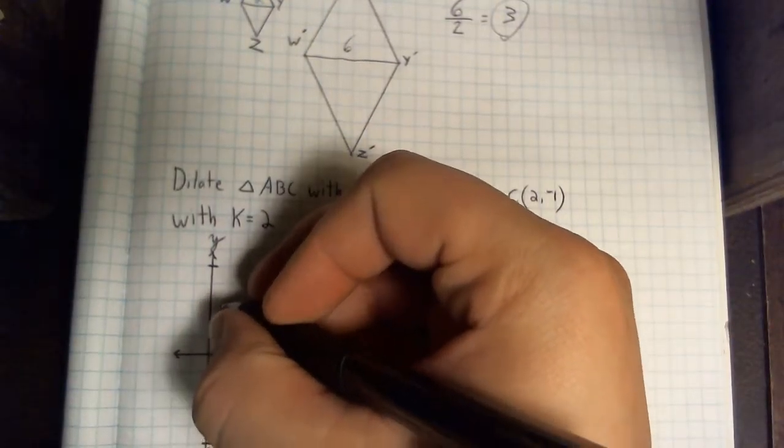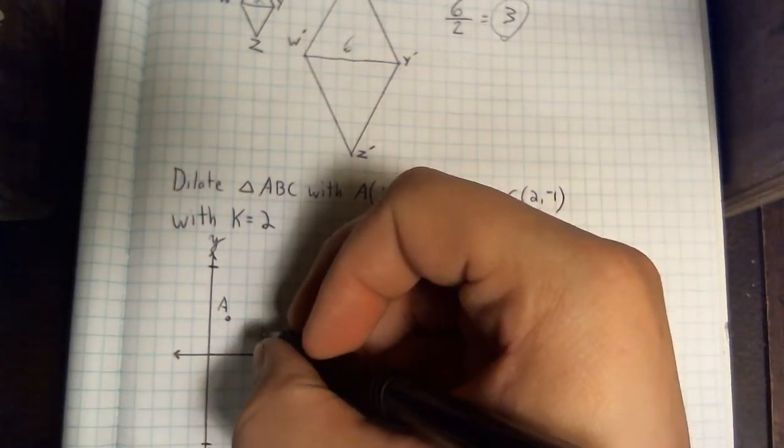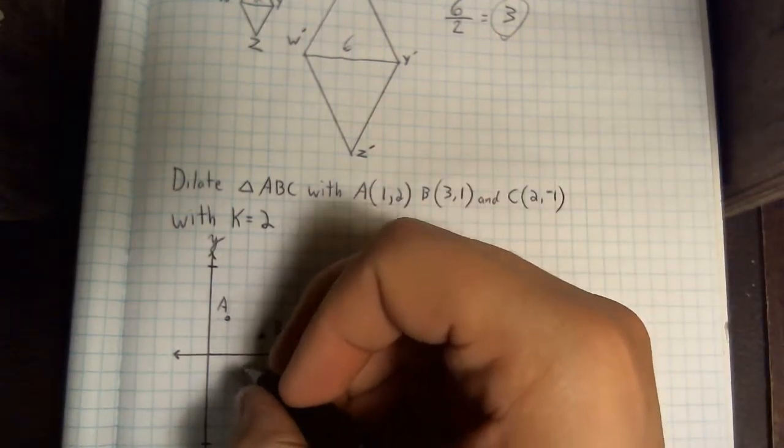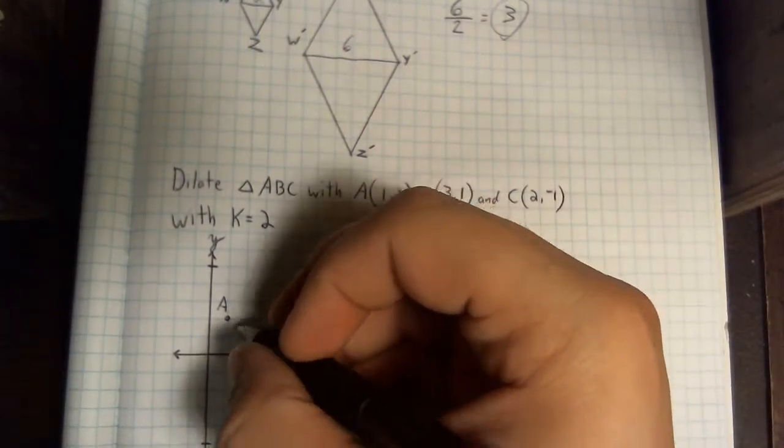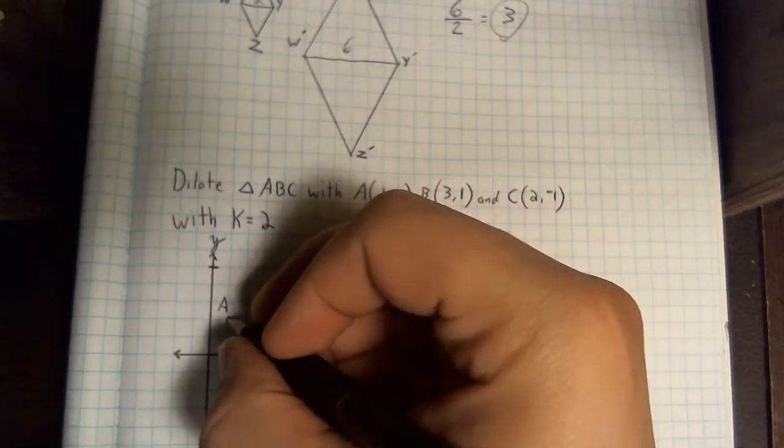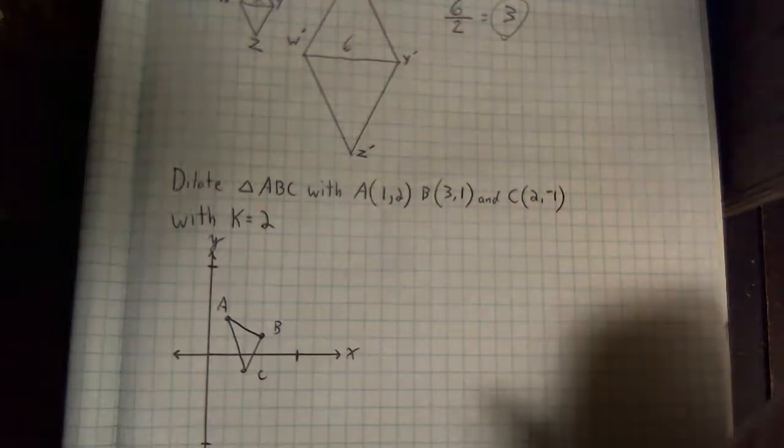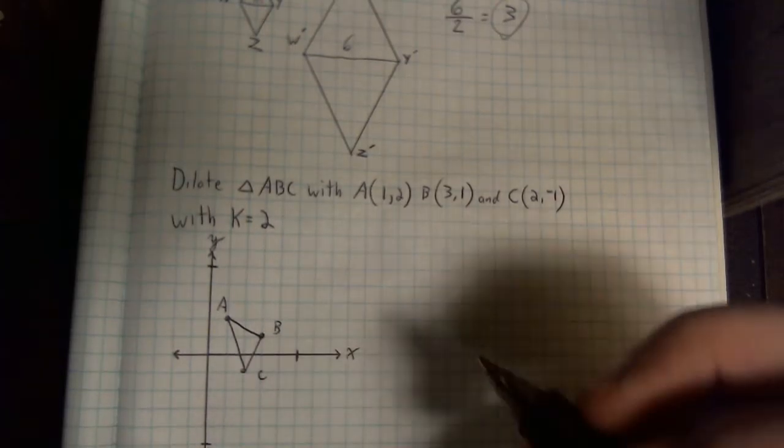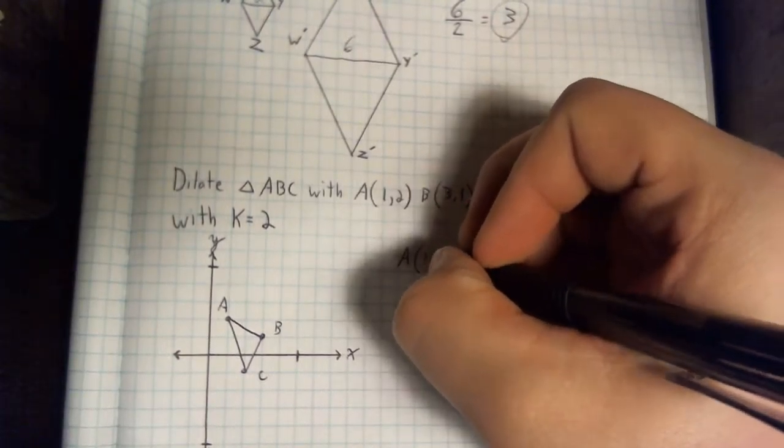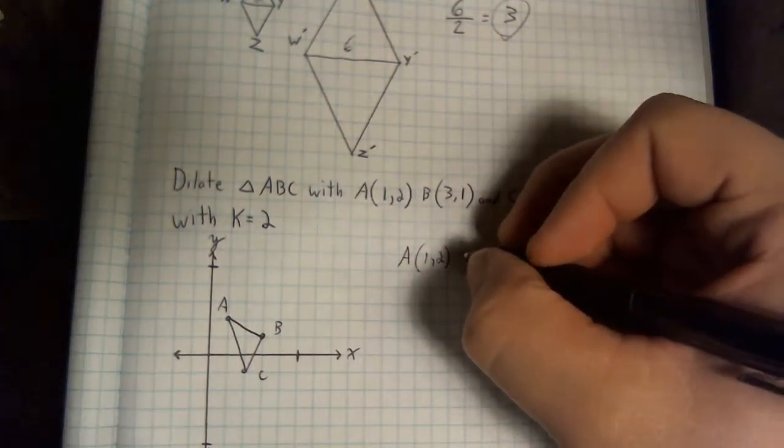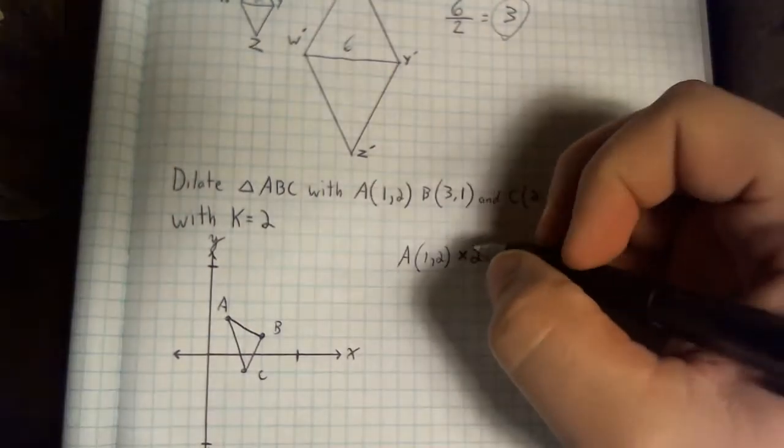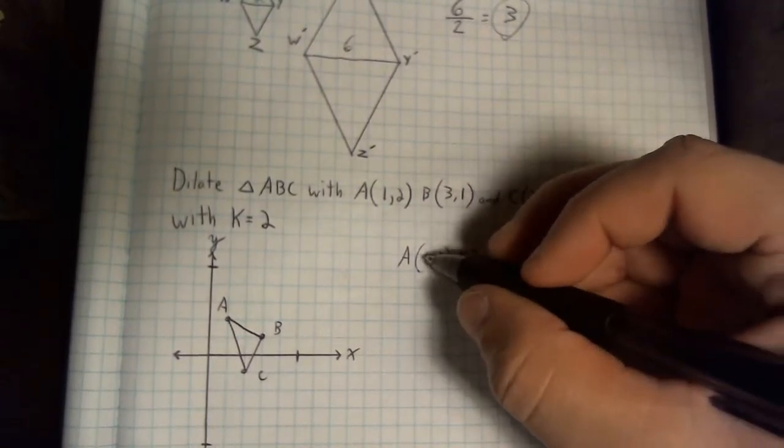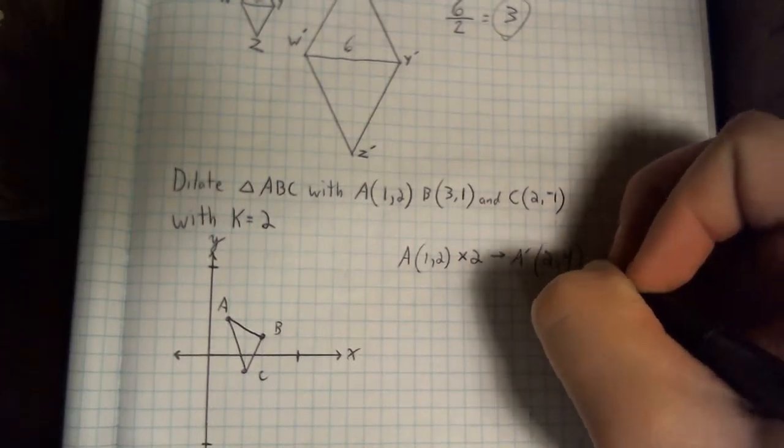So let's see how this works in action. Let's plot out our shape first. A is at 1, 2. B is at 3, 1. And C is at 2, negative 1. If I connect all of my points, that's our original shape. But we want to dilate it by 2. So like I said, this is just a quick multiplication problem. If I start A off at 1, 2, I'm going to multiply by our scale factor of 2. That's going to give me A prime will be at 2, 4.